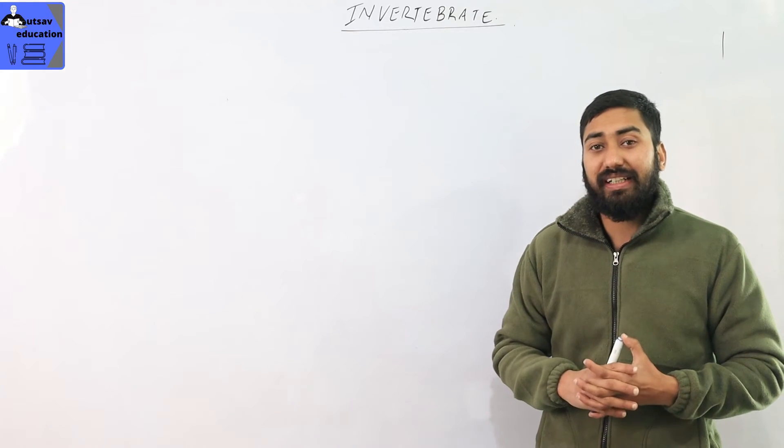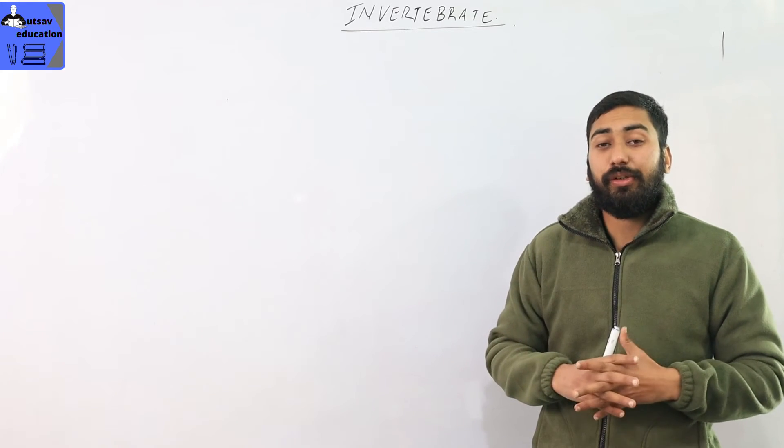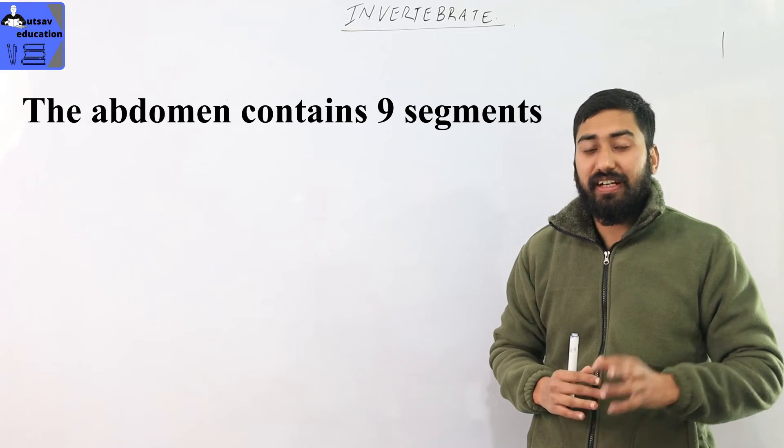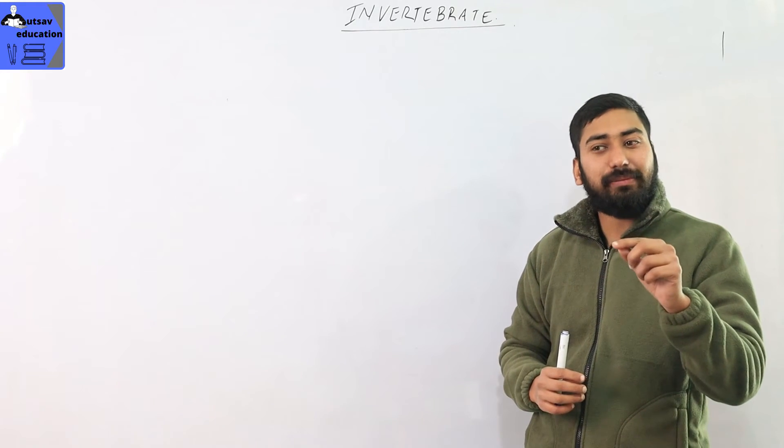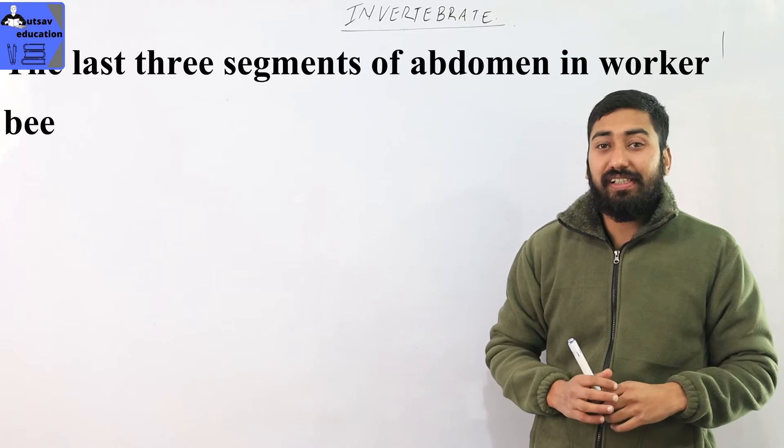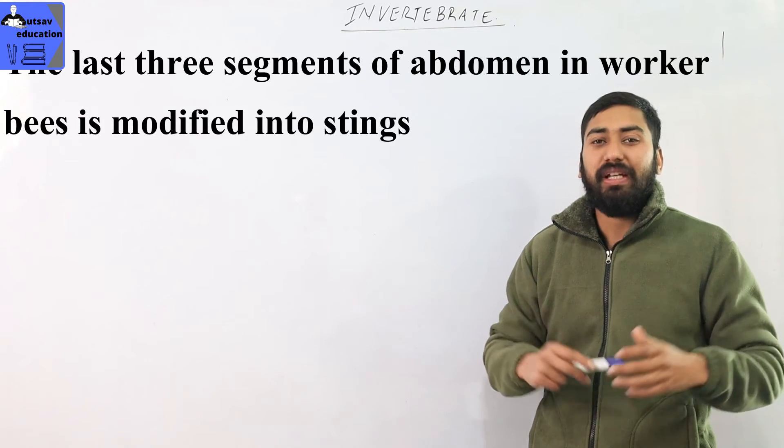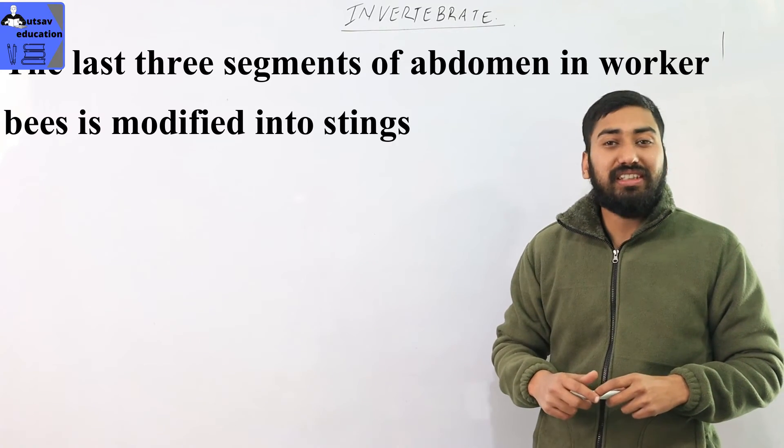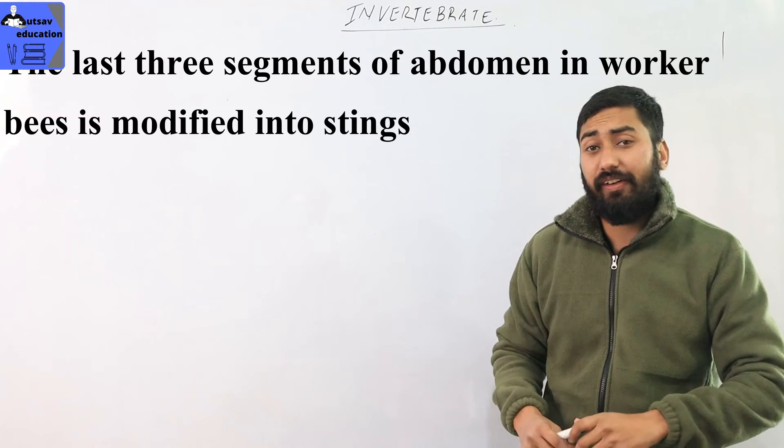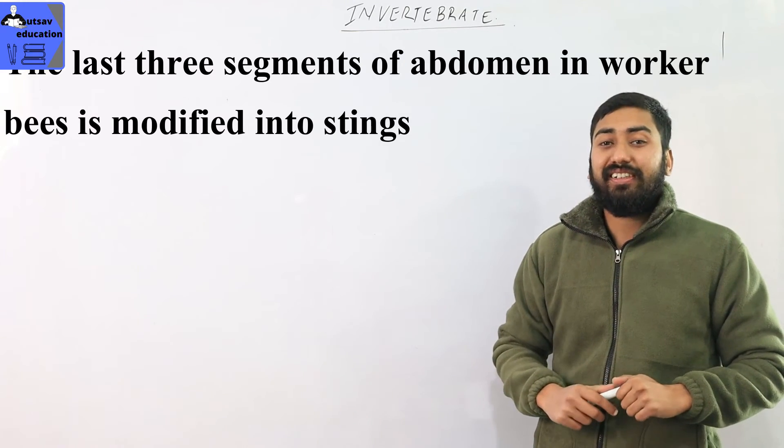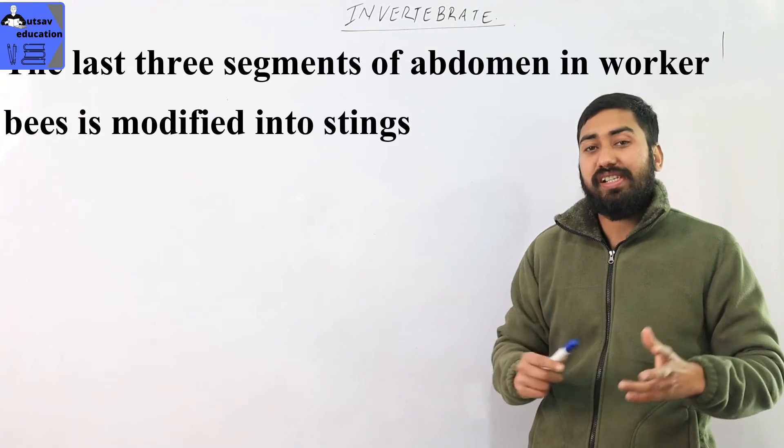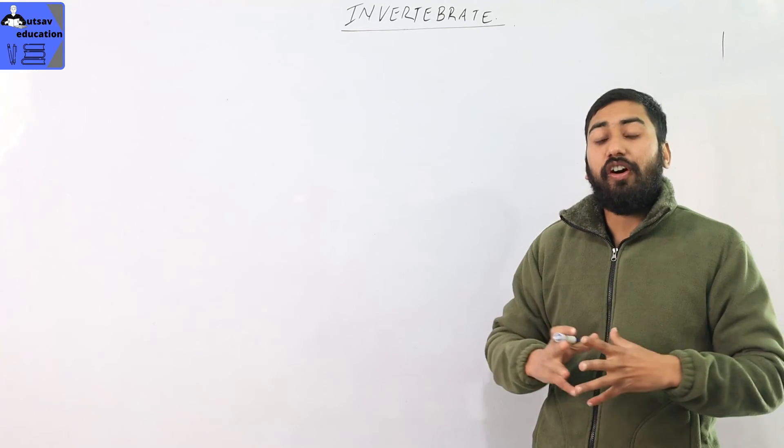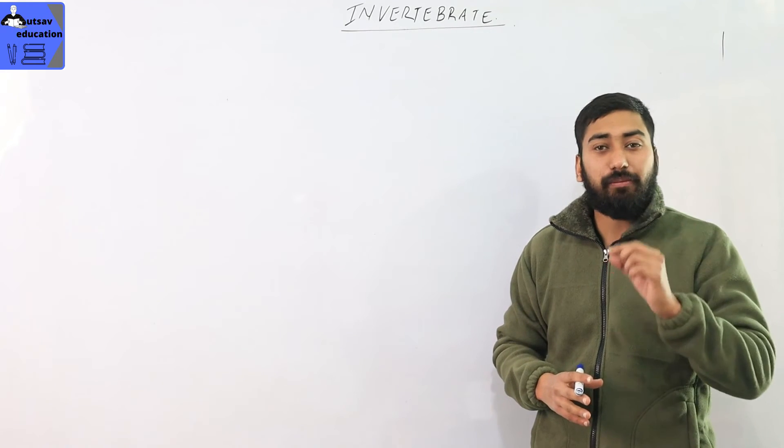The abdomen has 9 different segments. In worker bees, this is converted into a sting because the worker bee does not have reproductive parts and does not lay eggs. This is the honeybee body structure.